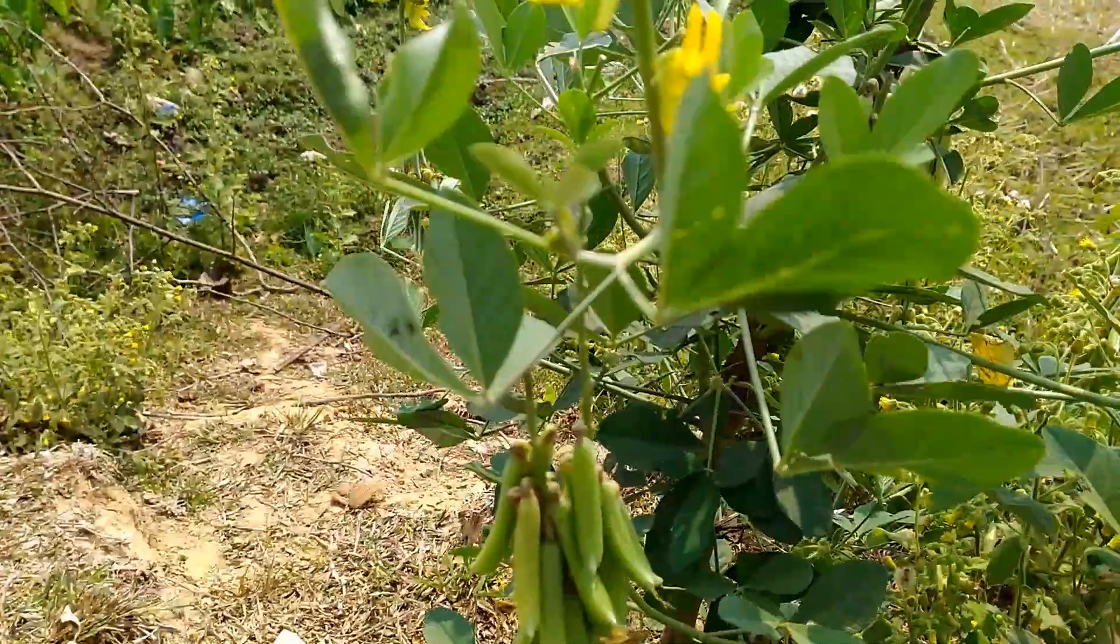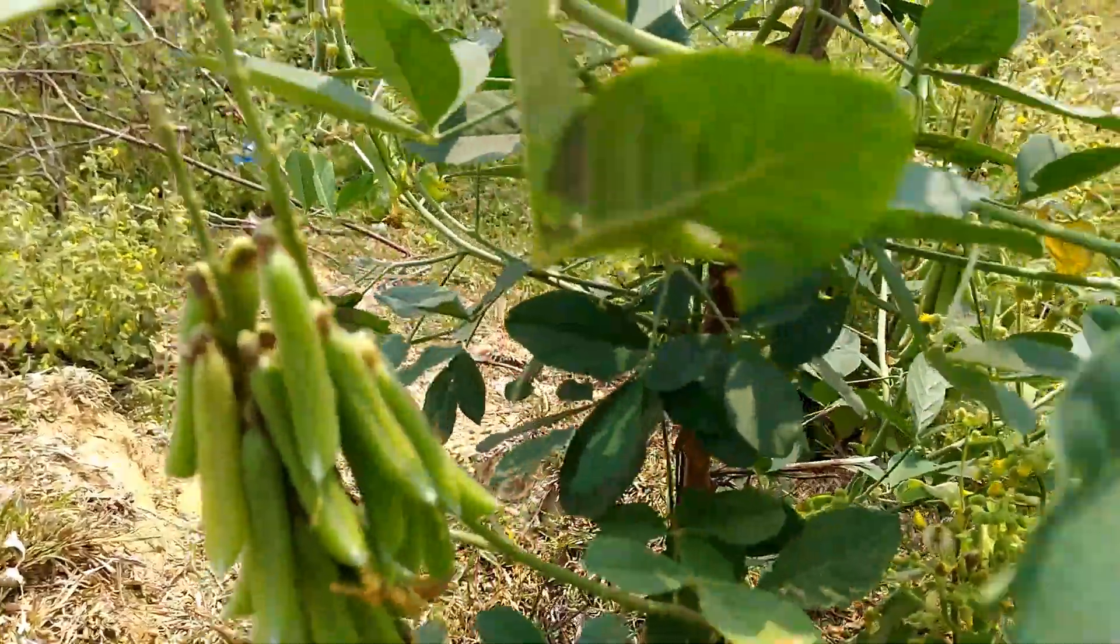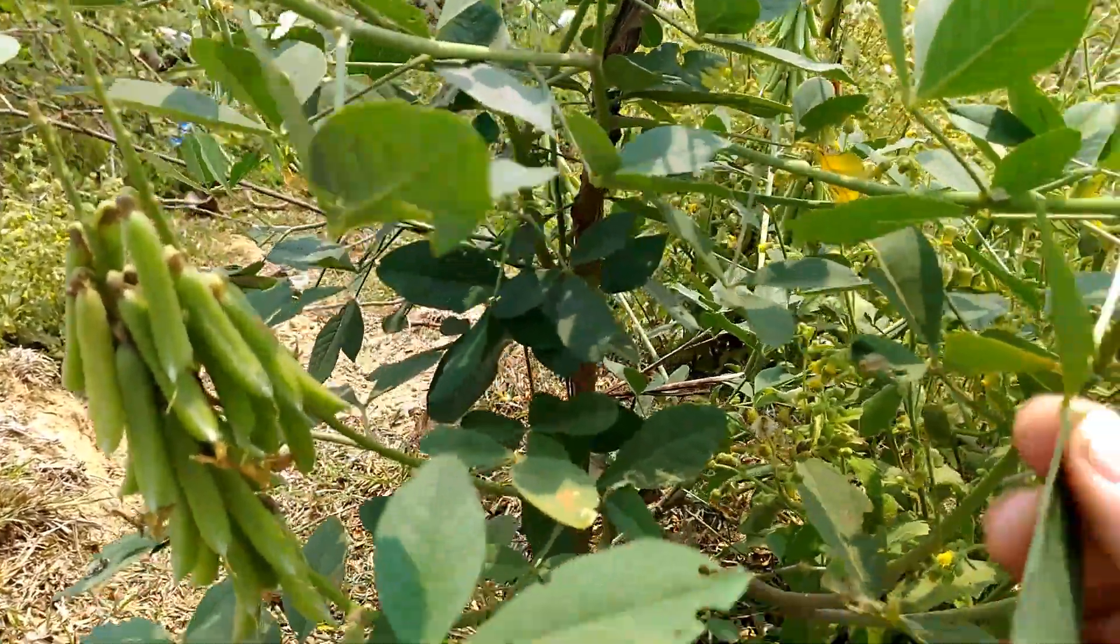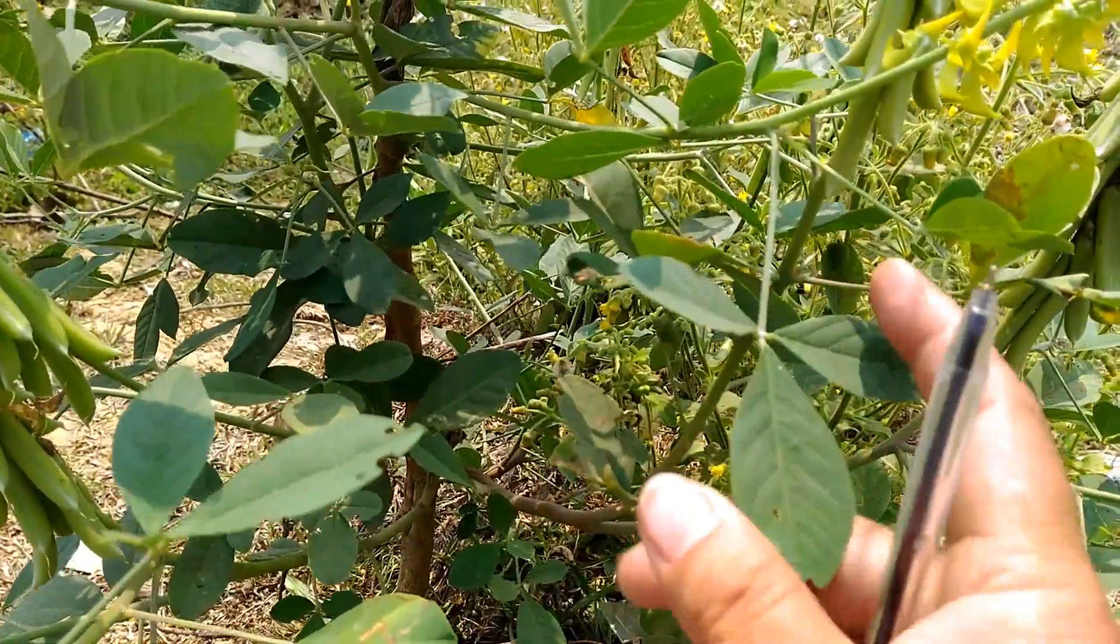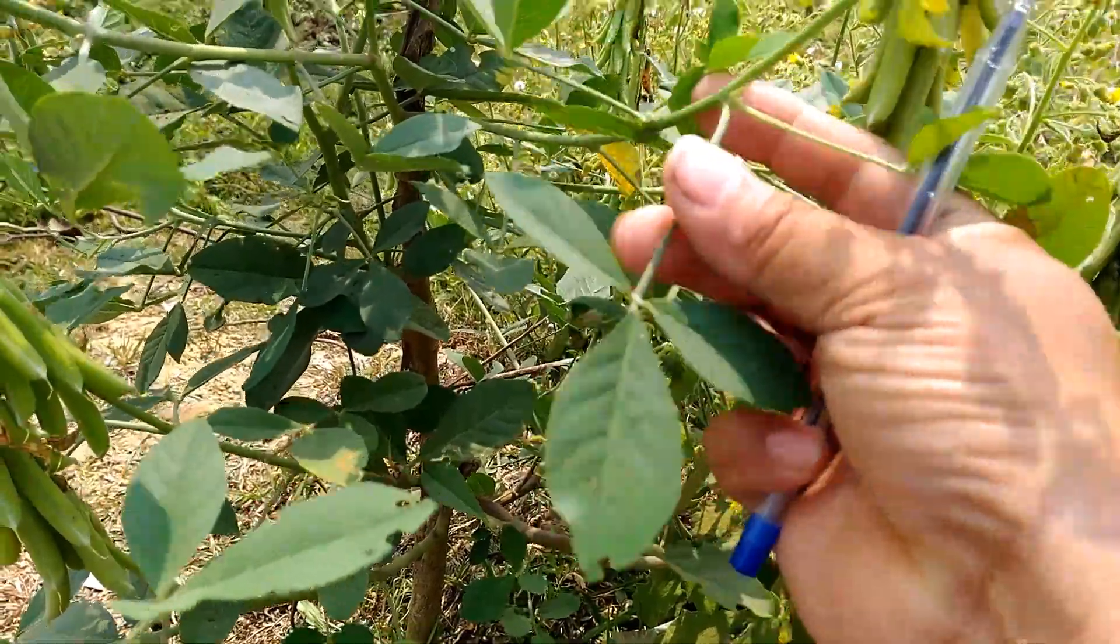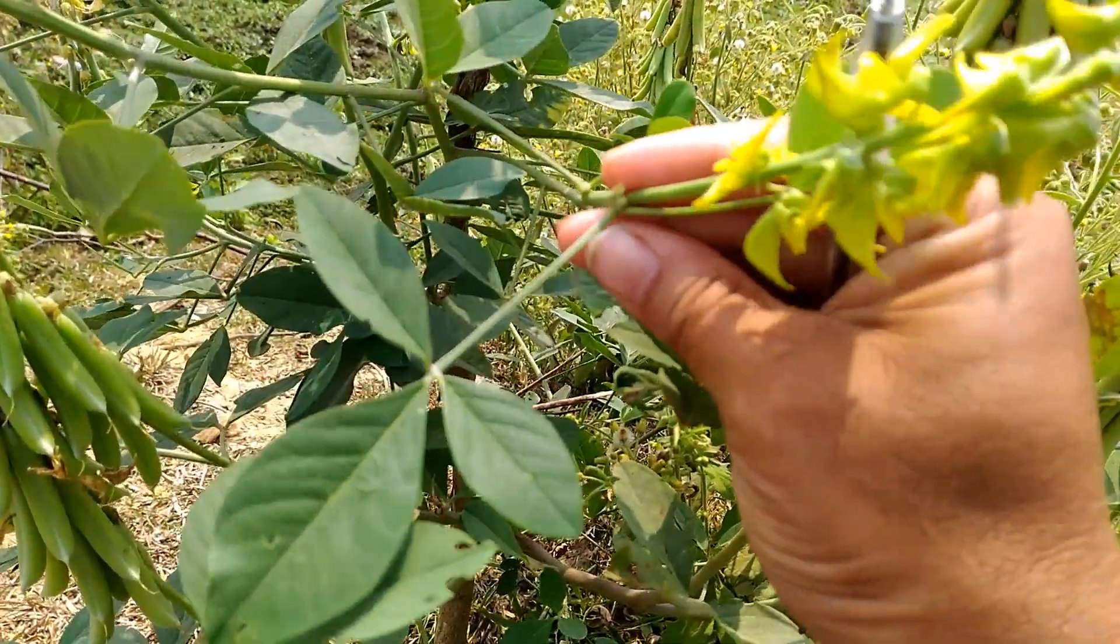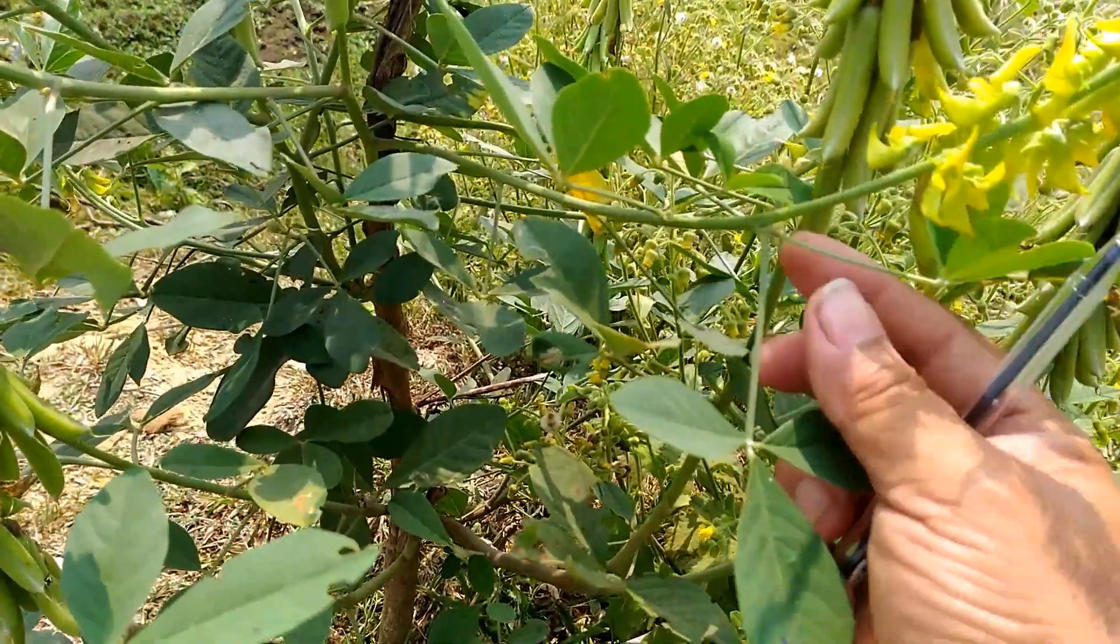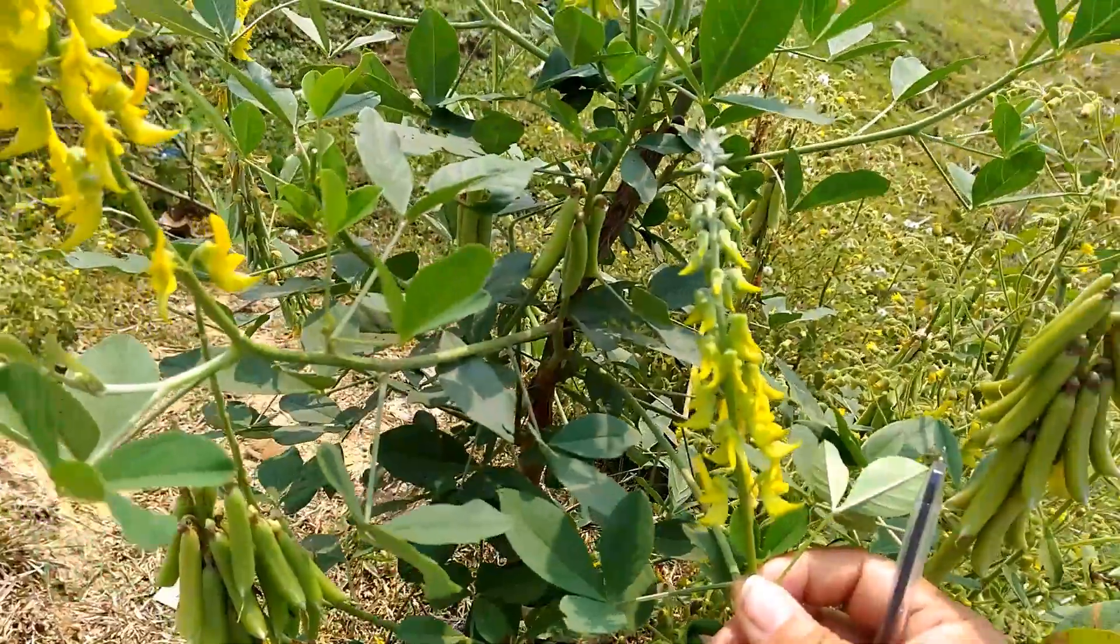It is an undershrub with slender sulcate branches. The leaves are alternate, compound, imparipinnate, and trifoliate, long petioled and stipulate. Stipules are free, lateral, and minute. Leaflets are 5 to 8 centimeters long.